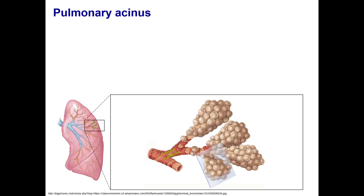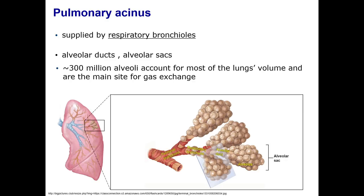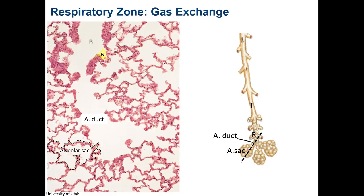The pulmonary acinus is the unit of gas exchange in the lung, which is supplied by the respiratory bronchiole and contains the alveolar duct, alveolar sacs, and the alveolus, the main site for gas exchange. Here is an H&E stained section of lung tissue showing these structures, beginning with the respiratory bronchiole, which is the first structure of the respiratory zone.